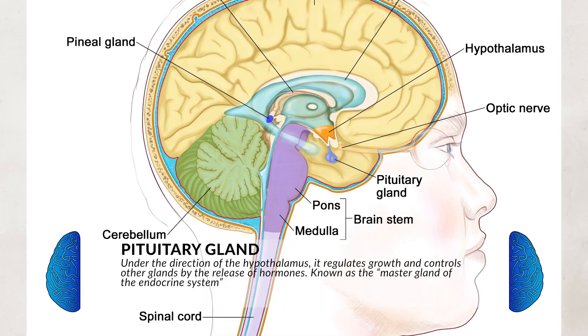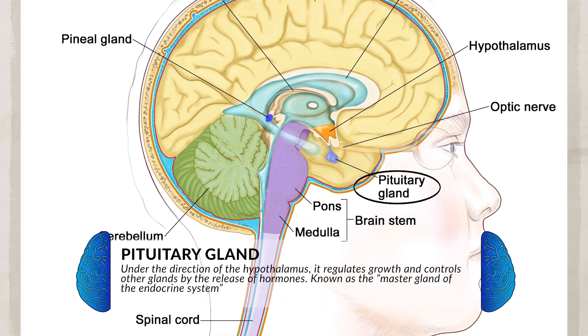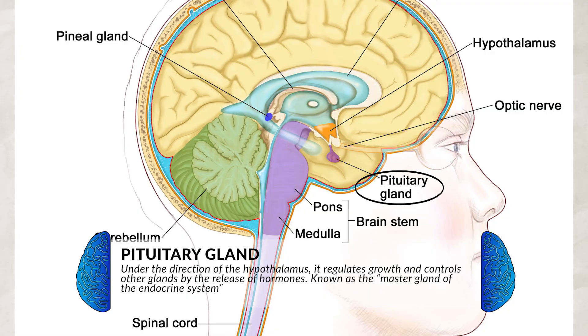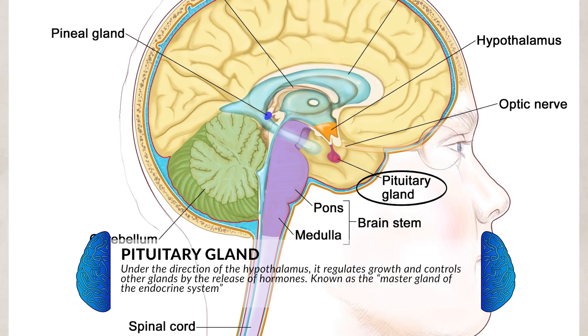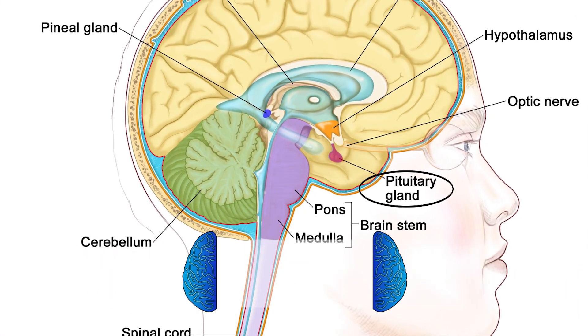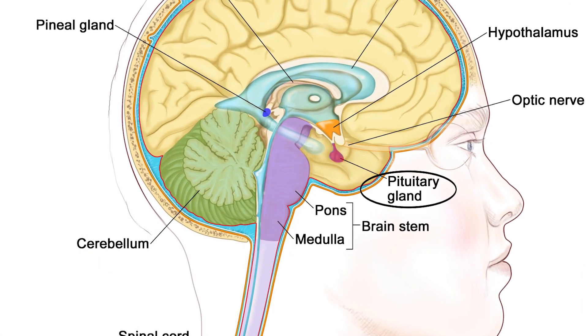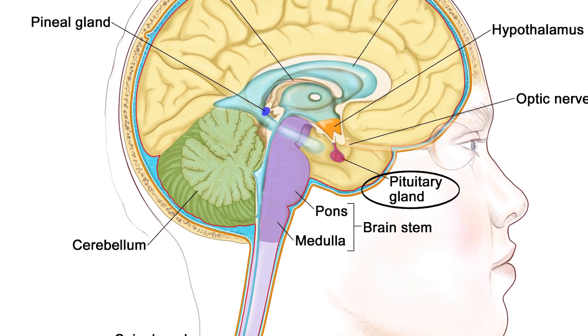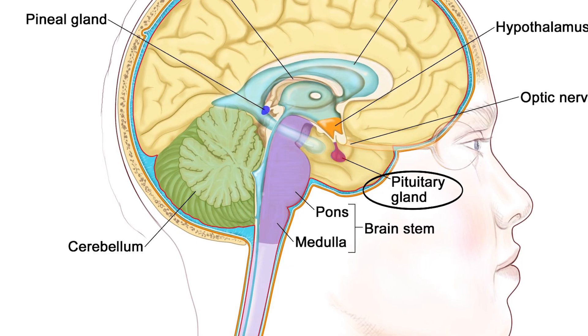The pituitary gland, under the direction of the hypothalamus, releases growth hormones, oxytocin, and vasopressin. It also communicates with other glands around the body to produce their hormones and communicates with some organs of the body, which is why this gland is sometimes known as the master gland of the endocrine system — because it helps regulate all the other glands.